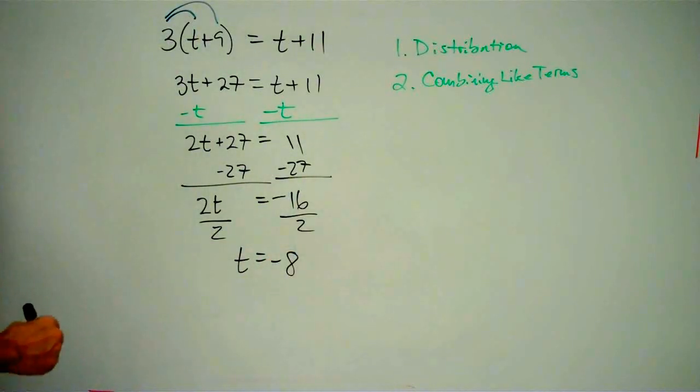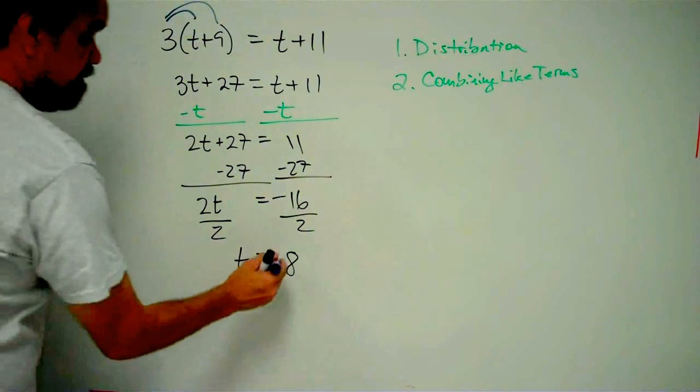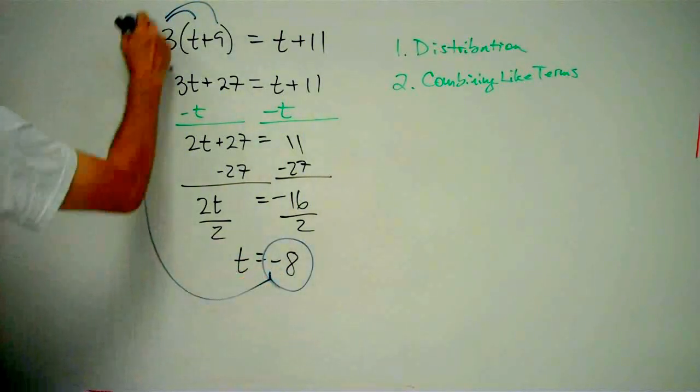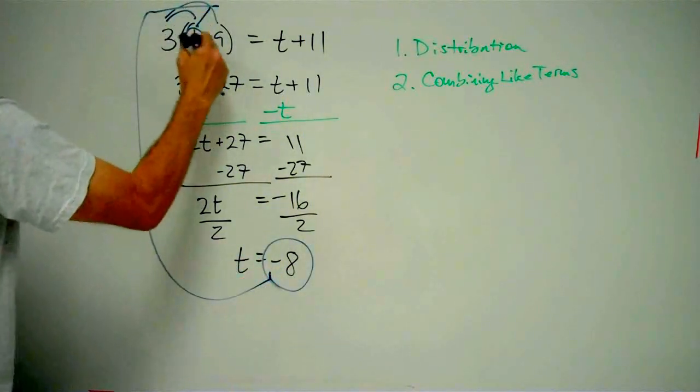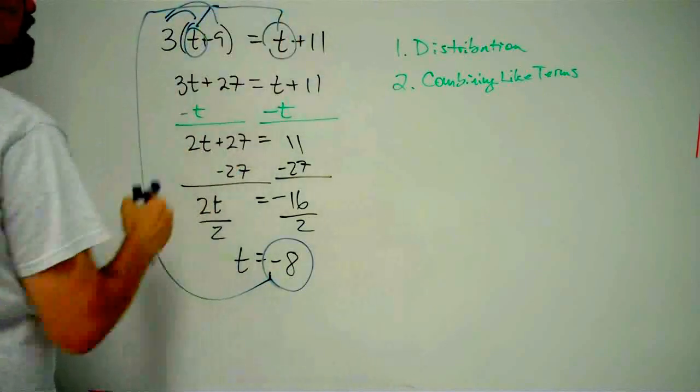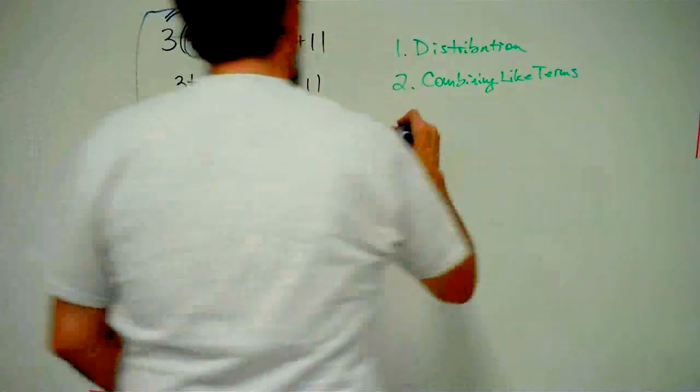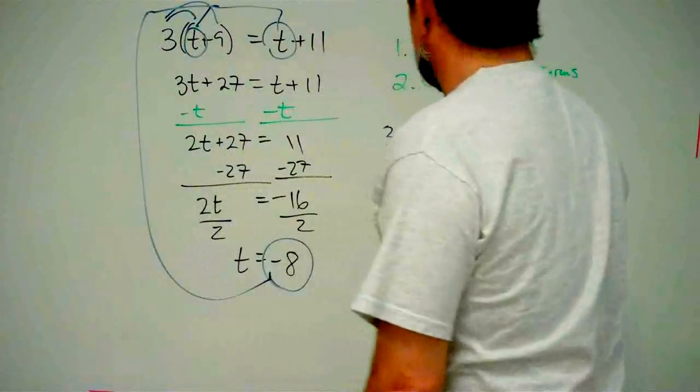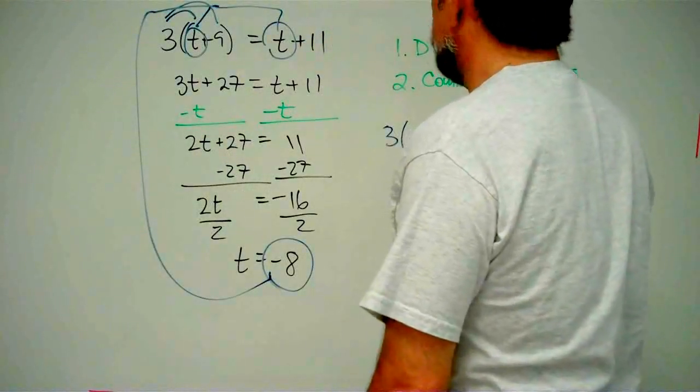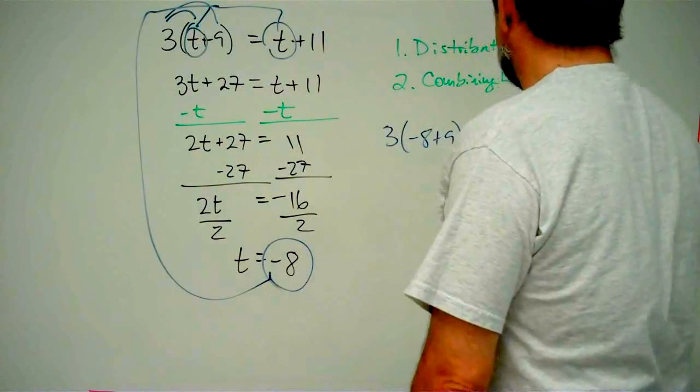Is it right? I don't know. Let's plug it in. Let's take this negative 8, and let's replace our t's, both of our t's, with negative 8. So that's going to give me 3 times negative 8 plus 9 equals negative 8 plus 11.